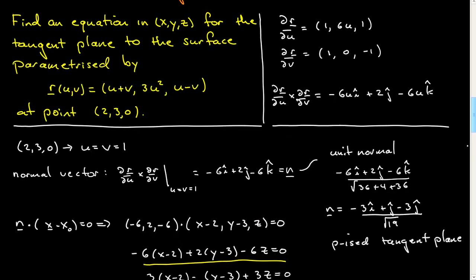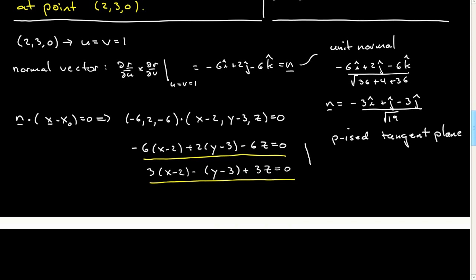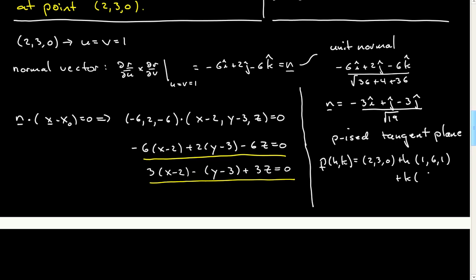If you wanted to parametrize the tangent plane, you could do that as well. The parametrized tangent plane would be p of h, k equal to the point 2, 3, 0, plus h times the derivative — which gives 1, 6, 1 — plus k times the other derivative evaluated, which gives 1, 0, minus 1. You can simplify this further if needed.